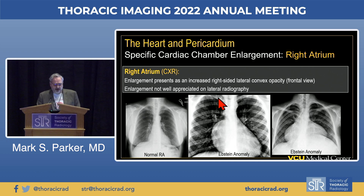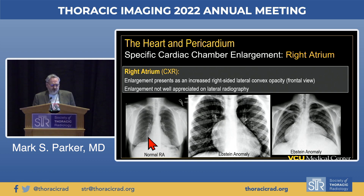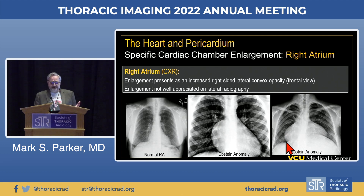With right atrial enlargement, the normal right heart border becomes outwardly and more laterally convex, as classically seen in patients with Ebstein's anomaly, but it may also be seen in other forms of right heart disease and tricuspid disease. On the lateral examination, this is not well appreciated due to superimposition of the cardiac chambers.